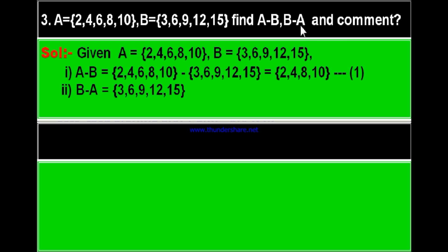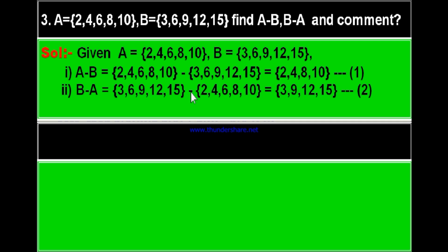Now the second part: let us find B minus A. B minus A means write set B first — {3, 6, 9, 12, 15} — minus set A = {2, 4, 6, 8, 10}. 3 is not in A — write 3. 6 is in A — leave it. 9 is not in A — write 9. 12 is not in A — write 12. 15 is not in A — write 15. Therefore B minus A equals {3, 9, 12, 15}.